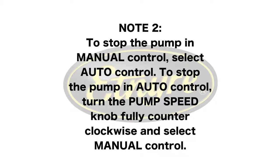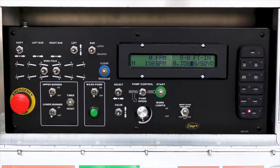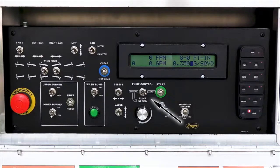To stop the pump in manual control, select auto control. To stop the pump in auto control, turn the pump speed knob fully counterclockwise and select manual control. The pump can also be stopped by turning the emergency stop switch off.